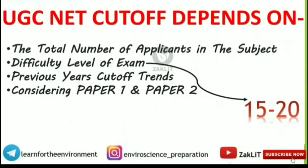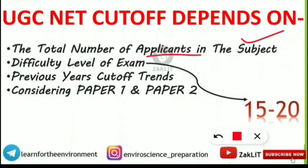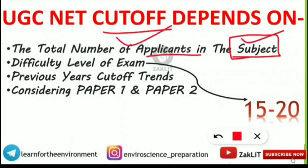It is not all about the expected cut-off — we should know what the cut-off depends on. Cut-off depends on four important factors. Number one is the total number of applicants applied in the subject. We are concerned about the environmental science paper, so how many students appeared for this exam will also decide the cut-off percentage. If you don't know the 6% rule for UGC Net JRF and UGC Net LS, check the link in the info button.